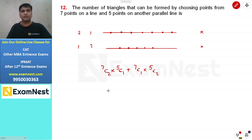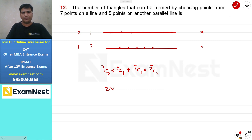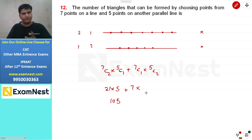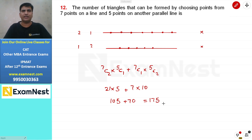7C2 = 21, calculated as 7×6 / (1×2) = 42/2 = 21, multiplied by 5 gives 105. For the second case, 7C1 = 7 and 5C2 = 10, calculated as 5×4 / (1×2) = 10. So 7×10 = 70. Adding both cases: 105 + 70 = 175, which is the answer to this question.